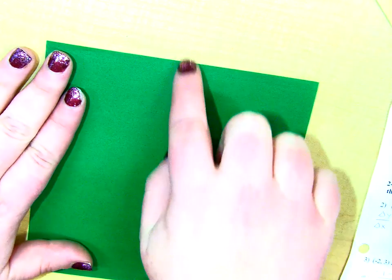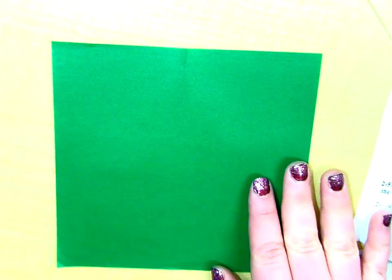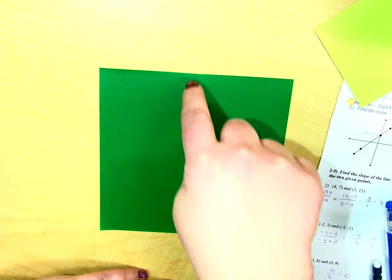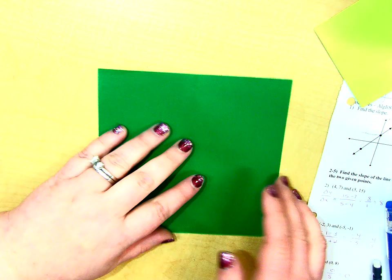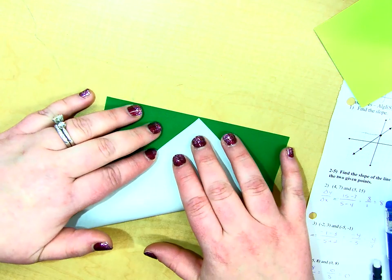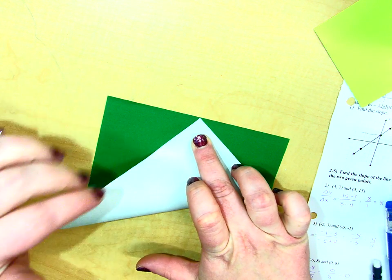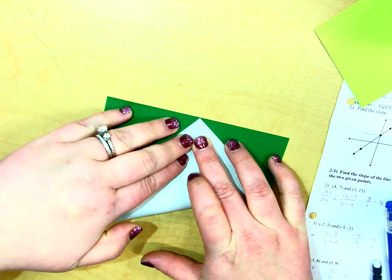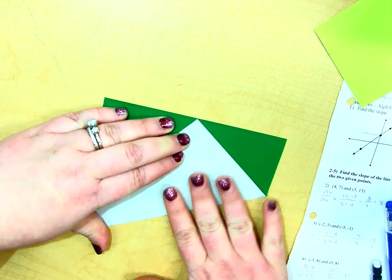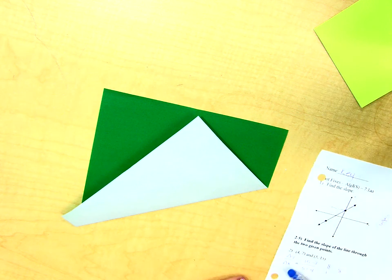So once you have that little ridge there, put it back flat on your surface, and now you're going to take your bottom right corner, and you're going to bring it up to meet that point. So like this. Take that bottom right corner and bring it up so that it just touches right there. And once you have it, then you're going to press and make a crease here. Okay? So everybody do that.